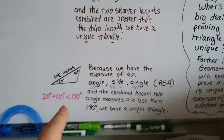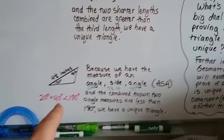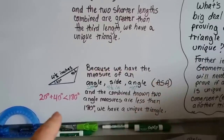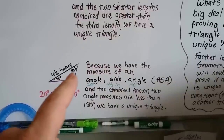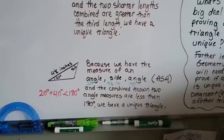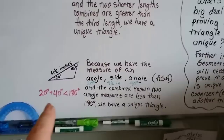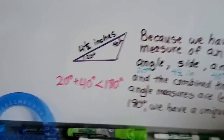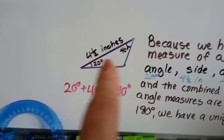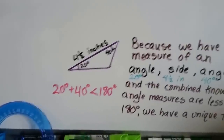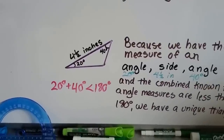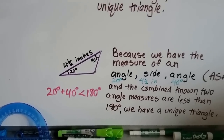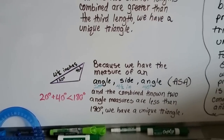Now angle-side-angle (ASA): we have the measure of an angle, a side, and an angle, and the combined known angle measures are less than 180 degrees, so we have a unique triangle. Here we have angle 20 degrees, side four and a half inches, and angle 40 degrees. The two angles are less than 180 degrees, so we know it's a unique triangle.